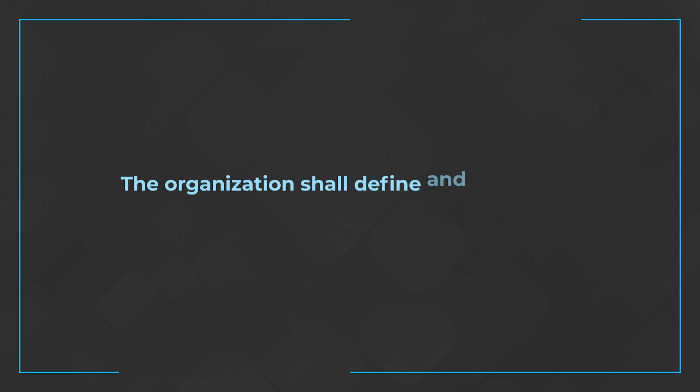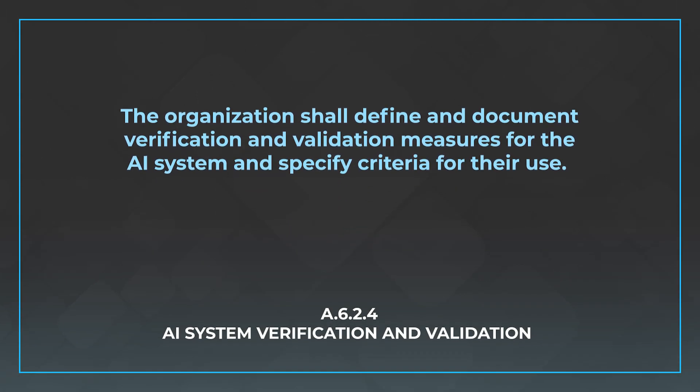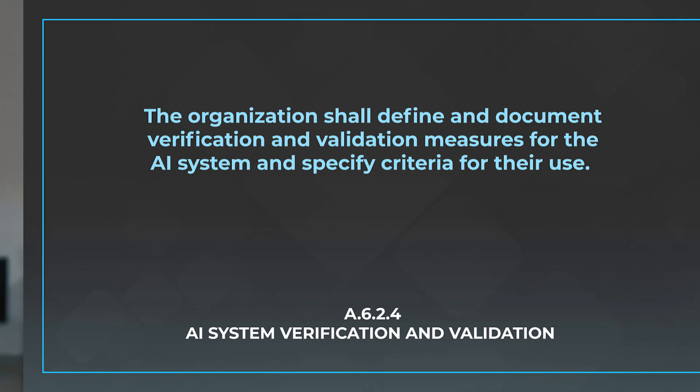The next control is A.6.2.4, AI system verification and validation, which is all about making sure that the measures used to test the system are defined. The control says the organization shall define and document verification and validation measures for the AI system and specify criteria for their use. You can think of this as like a user story or business case for a particular set of AI-driven features — you need to document what those are and give testing a way to ensure that objectives are met and the system was designed appropriately.